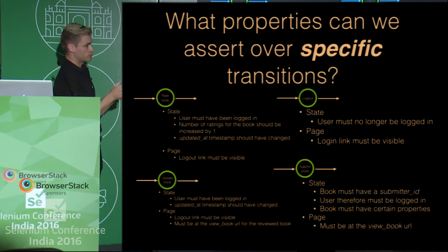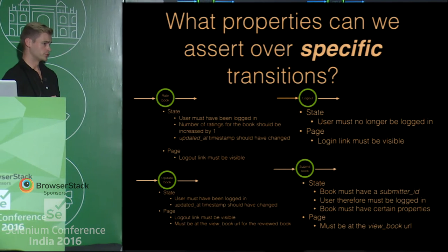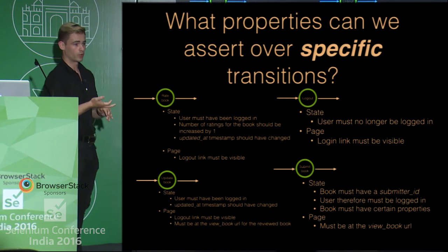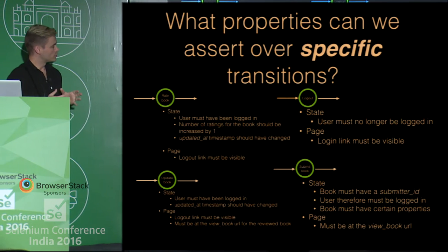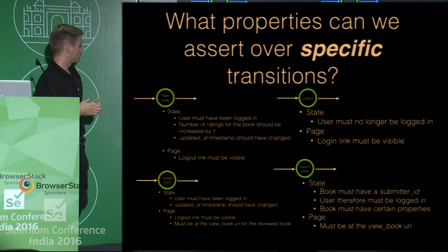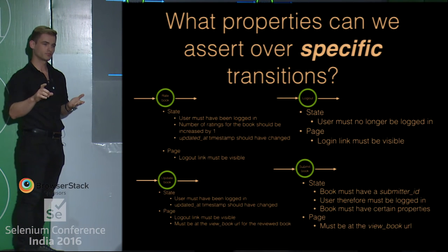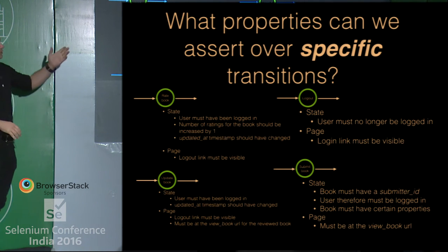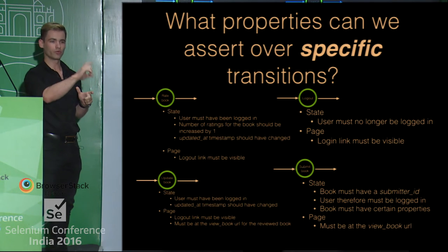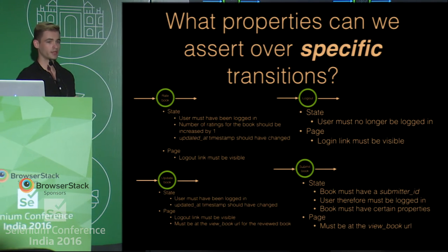More interestingly, we can actually target specific transitions. We can say, for example, if we're at the rate book page and we've just come out of it, the user must have been logged in to do that. If we're keeping track of it, the number of ratings for a book has to increase by one. The updated-at timestamp should have changed. We can do tests on the properties of the state, but we can also test on the page rendering. For example, the logout link must be visible. If we've updated a book, we must be at the view book URL. Each transition has a specific set of properties to ensure about the state and the page.